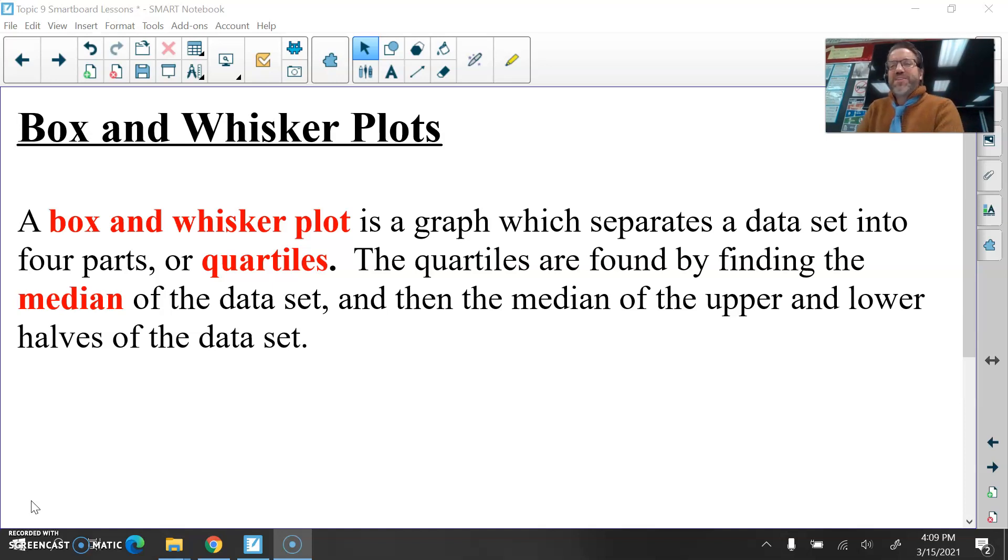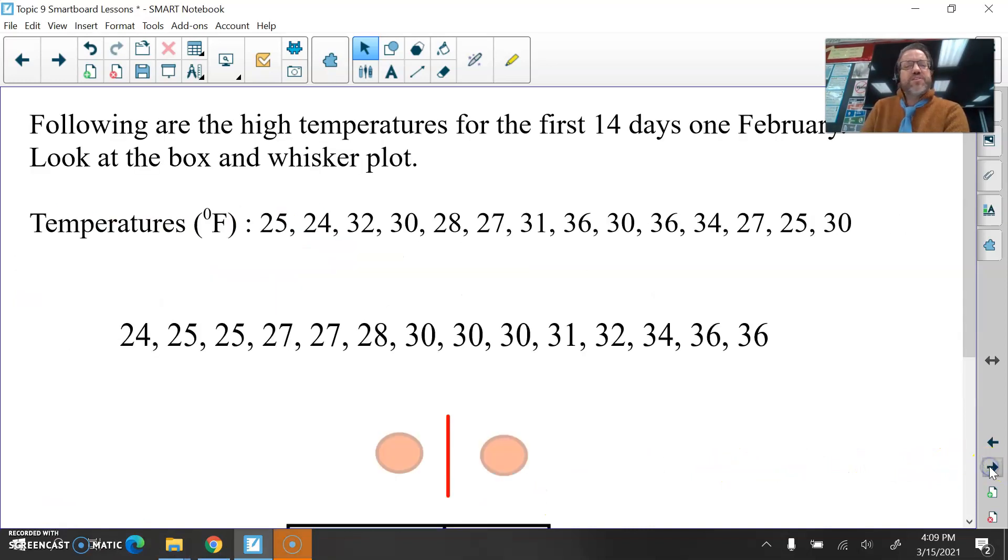And today we're just looking at another way that we can organize data graphically - box and whisker plots. Now it's a fun name, I mean whiskers, we think of our favorite cat or our favorite dog. But a box and whisker plot is a graph that is separating data into four parts, and those four parts are called quartiles. See the root word there, quart means four, doesn't it? And to separate the data into four parts, we'll be using the median, and we'll be using the median repeatedly to split it into four parts. You may remember median is pretty easy to find in a data set, so this should be pretty easy today making a box and whisker plot.